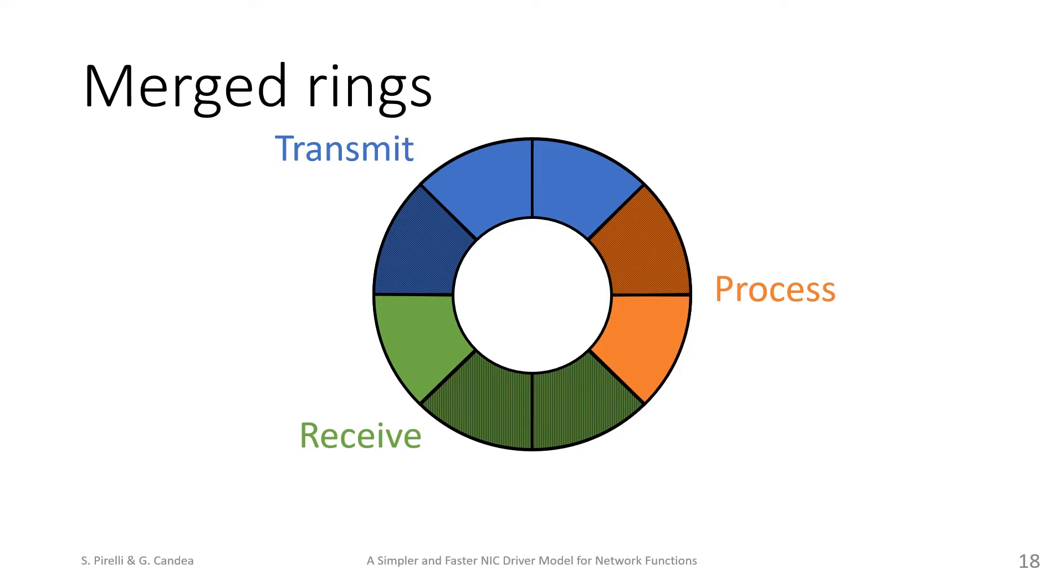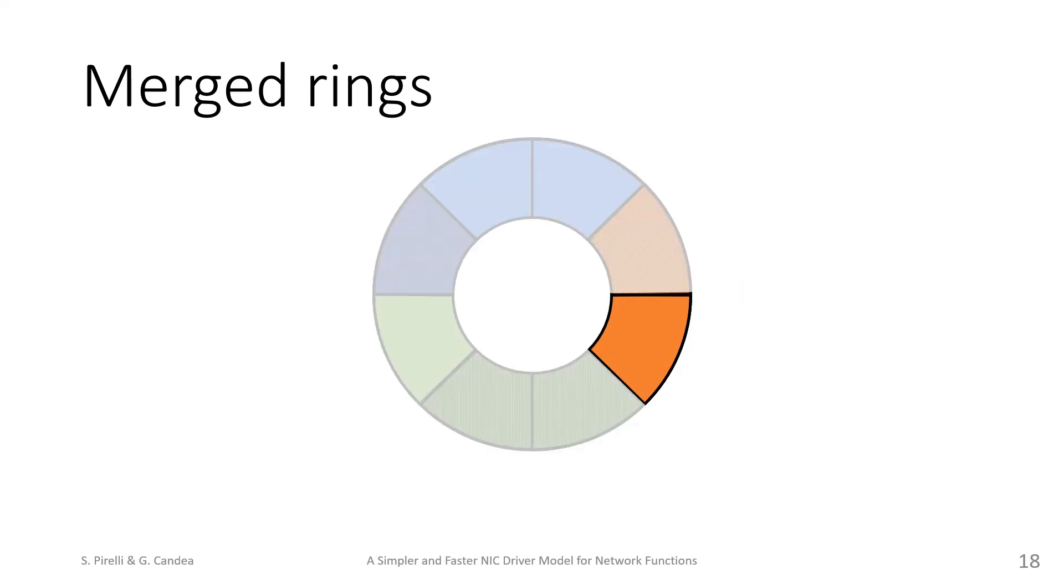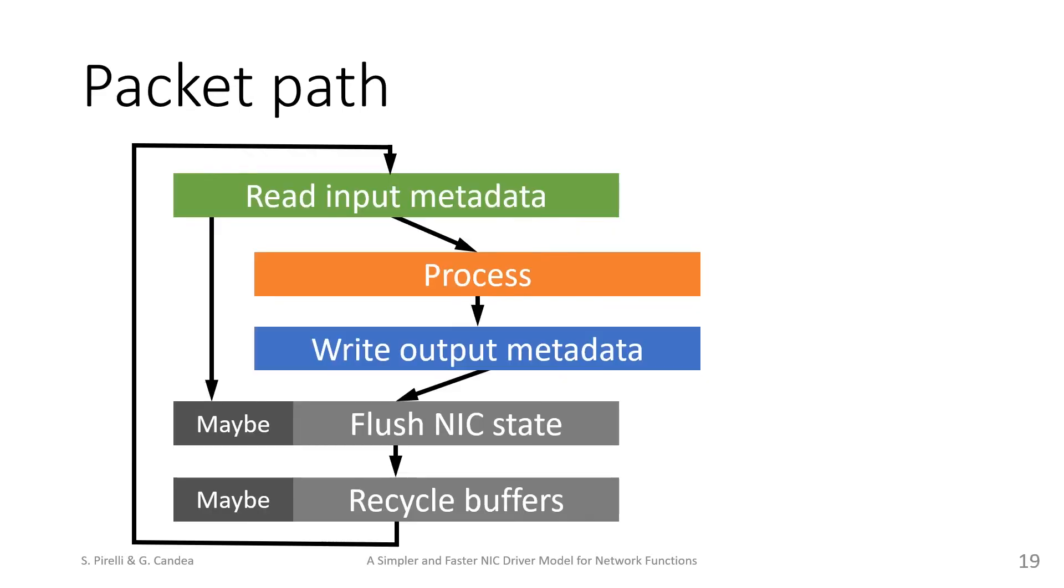For instance, let's look at this buffer here, currently being processed. When the network function has finished processing it, it will switch to the transmission state, which could mean dropping it. Then once the card has finished transmitting the buffer, it will switch to being used to receive data, and once that is done, it will switch back to being processed.